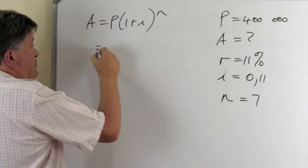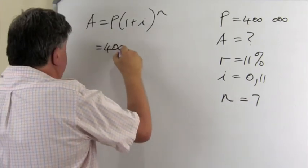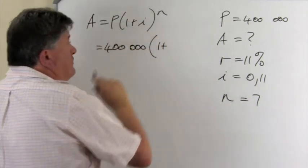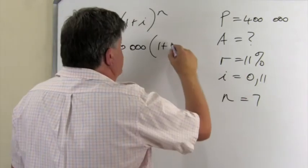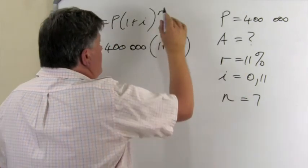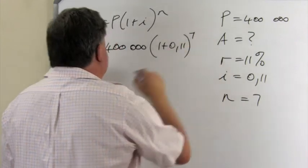So let's substitute. P is then 400,000, 1 plus what is my i? It's 0.11. My n, of course, is 7.